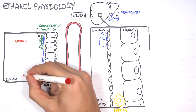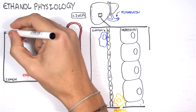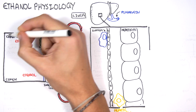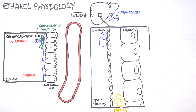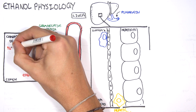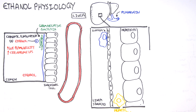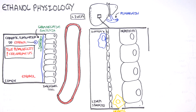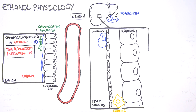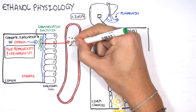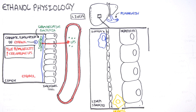Ethanol will be in the lumen when we drink it. Chronic alcohol consumption causes a few local changes in the gastrointestinal tract. Firstly, it actually increases gut permeability and promotes bacterial growth, which may lead to an increase in circulatory lipopolysaccharide. Lipopolysaccharide is an antigen found on these bacteria normally, so when you have a lot of growth of these bacteria due to alcohol and the increase in gut permeability, the lipopolysaccharide can get into circulation.